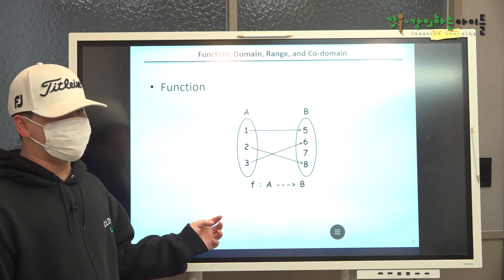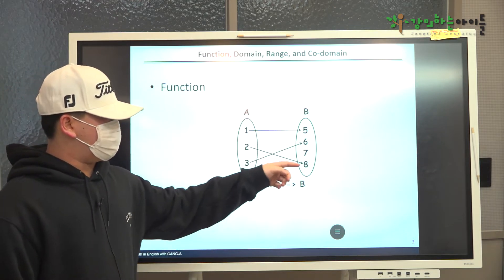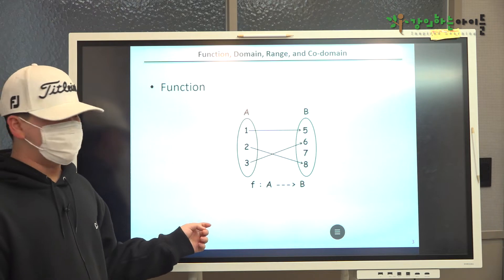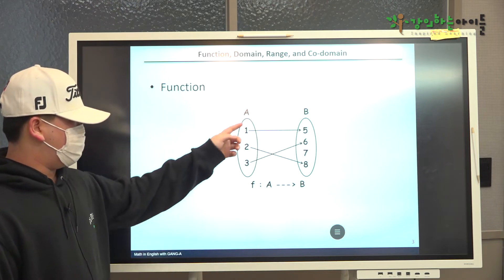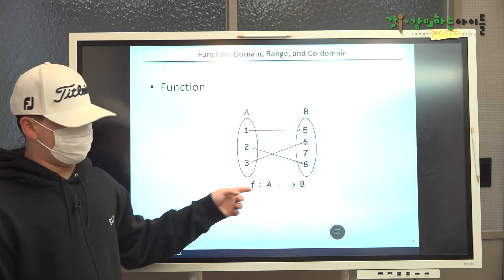Based on these definitions, we can see that the domain, codomain, and range of the functions shown in this slide are given by the set of 1, 2, 3, 5, 6, 7, 8, and 5, 6, 8, respectively.